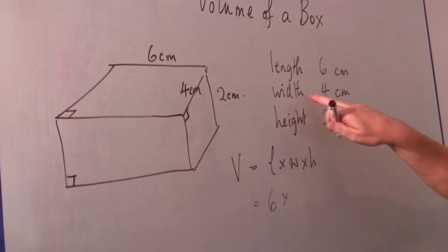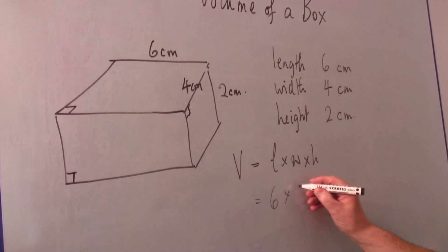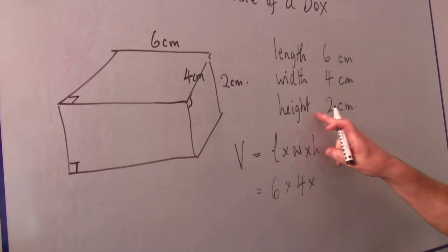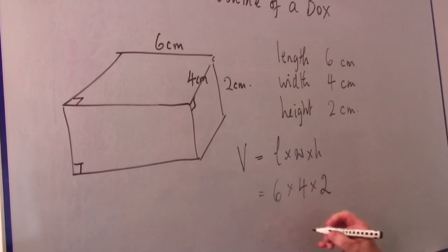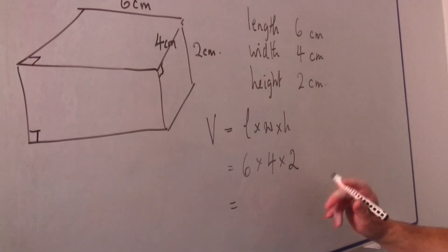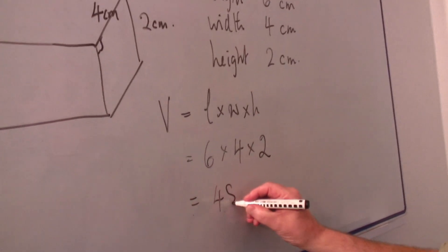Multiplied by the width, we know the width is four centimeters. And multiplied by the height, which is two centimeters, here it is. And the result we get is four sixes of twenty-four times two, which is forty-eight.